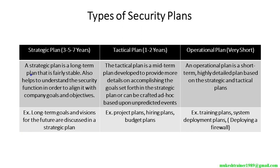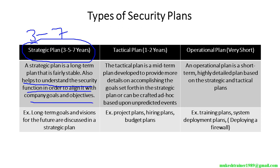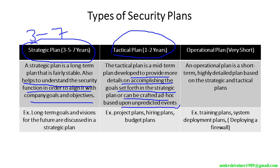There are types of security plans. The first is the strategic plan, which is a long-term plan lasting a minimum of 3 years to a maximum of 7 years. This plan helps understand the security function in order to align it with company goals and objectives. The tactical plan is basically for 1 to 2 years and is developed to provide more detail on accomplishing the goals set forth in the strategic plan, or it can be crafted ad hoc based upon unpredicted events.